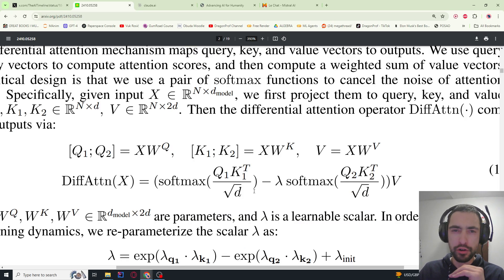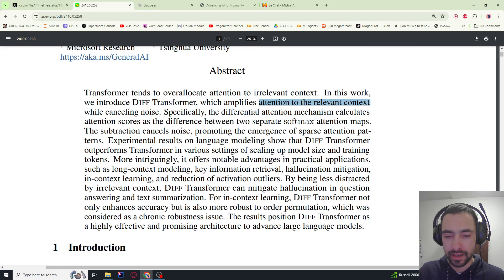Looking into this formula, they have the standard attention calculation and they also calculate the noise—attention noise—so this is attention to irrelevant tokens. Then they subtract attention to irrelevant tokens and get the attention to relevant tokens.